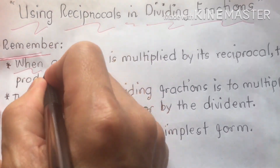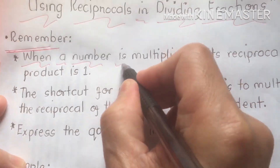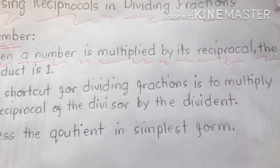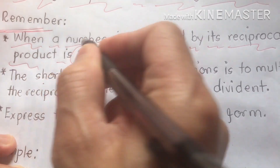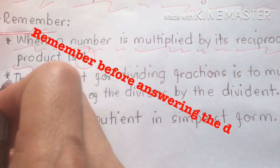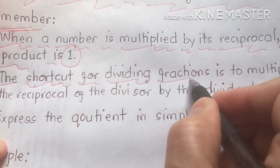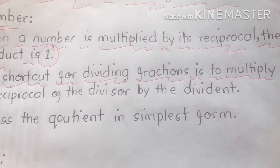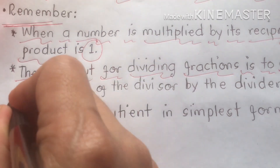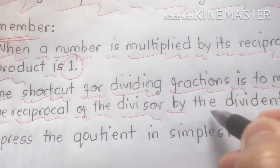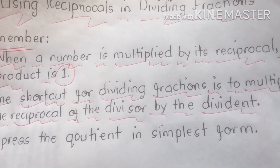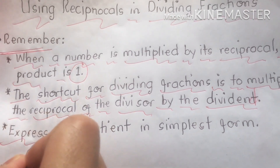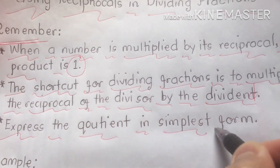First reminder: when a number is multiplied by its reciprocal, the product is one. Second reminder: the shortcut for dividing fractions is to multiply the dividend by the reciprocal of the divisor, through the multiplication process. We are going to express the quotient in simplest form.